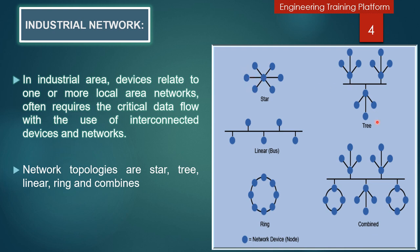In the tree topology, you can see local area networks distributed across different areas — local area network number one, number two, and number three. There is a main line, and each local area network has a main device. Other devices connect with the main lines and other local area networks respectively, and the main devices connect with the main lines.